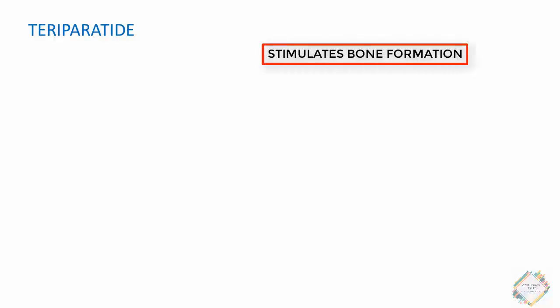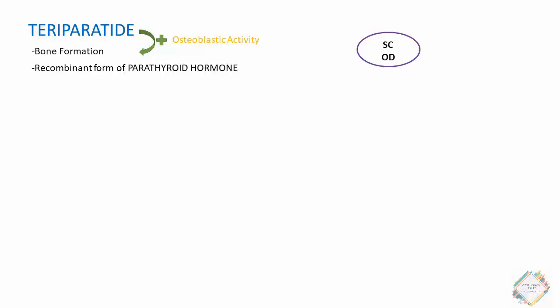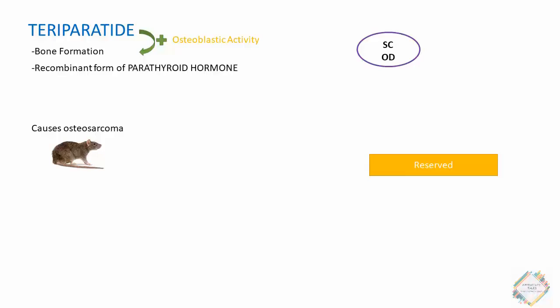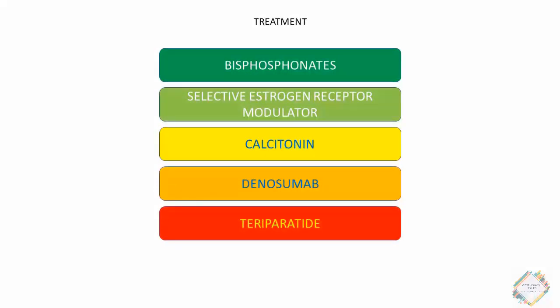Teriparatide is the first approved drug for osteoporosis that stimulates bone formation. Unlike other drugs that inhibit bone resorption, teriparatide promotes bone formation by stimulating osteoblastic activity. It is a recombinant form of human parathyroid hormone administered subcutaneously daily. It has been associated with increased risk of osteosarcoma in rats. Similar to calcitonin and denosumab, teriparatide is reserved for patients at high fracture risk who have failed or cannot tolerate other osteoporosis therapies. The drug classes covered include bisphosphonates, SERMs, calcitonin, denosumab, and teriparatide.